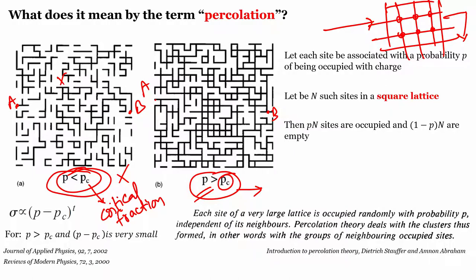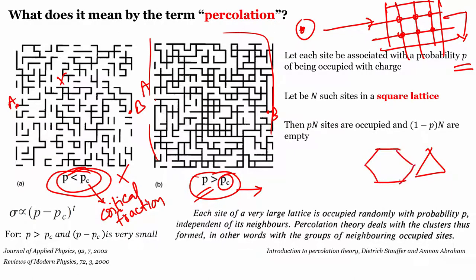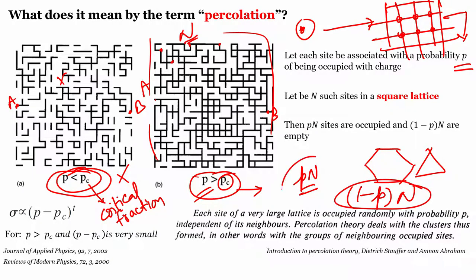We then associated a probability P for occupation of each site by a charge, using a square lattice as a case study — which can be extended to triangular and honeycomb lattices. If we consider each node as a site where electrons can occupy a position, the probability of occupying a location spatially is P. If there are n such sites, the number occupied is P×n, and the number vacant is (1-P)×n. By knowing the probability and number of sites, one can deduce the percentage fraction or PC at any given point.